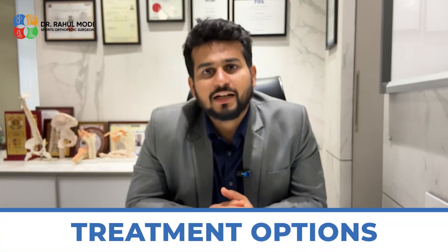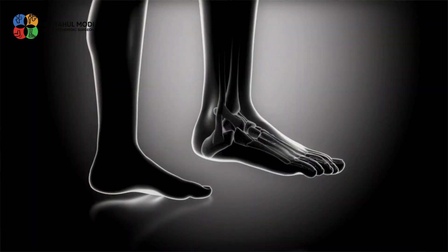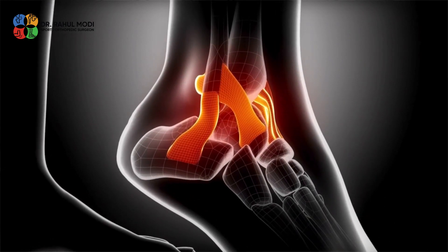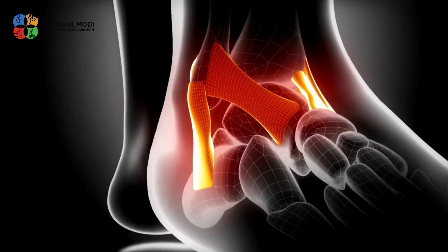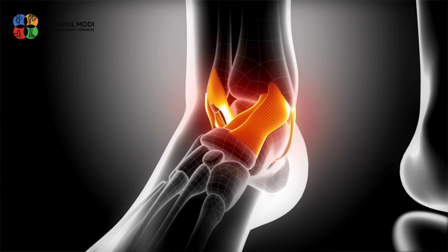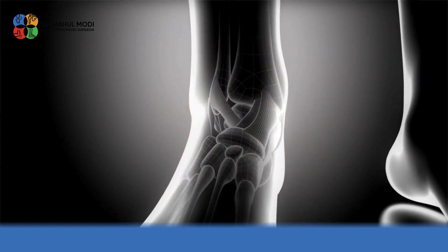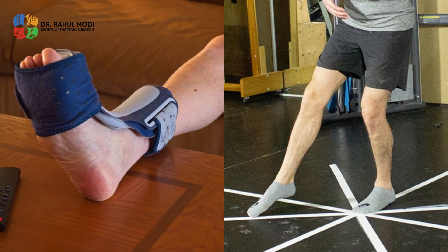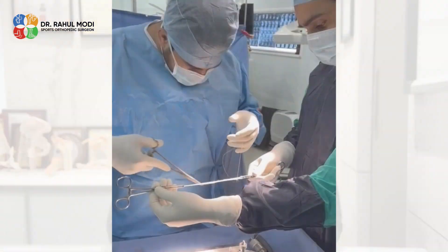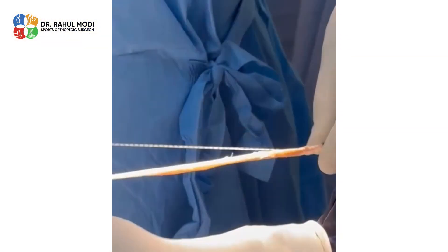Coming to the treatment options, the optimal treatment after a ligament injury depends on the joint involved in the tear. 90% of ankle ligament injuries can be treated without surgery, just by rest and rehab, whereas 90% of full thickness ACL tears of the knee require surgery.